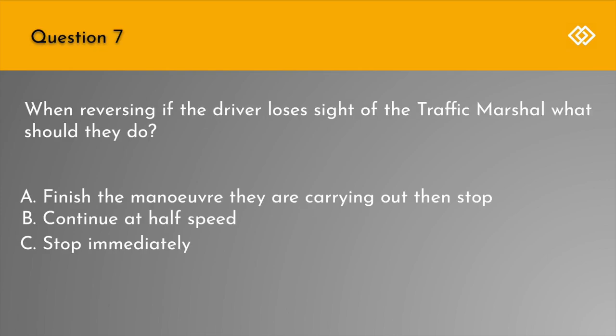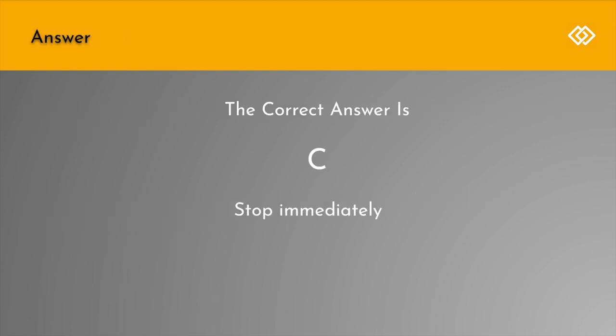Question 7. When reversing, if the driver loses sight of the traffic marshal, what should they do? A. Finish the manoeuvre they are carrying out then stop. B. Continue at half speed. Or C. Stop immediately. The correct answer is C: Stop immediately.